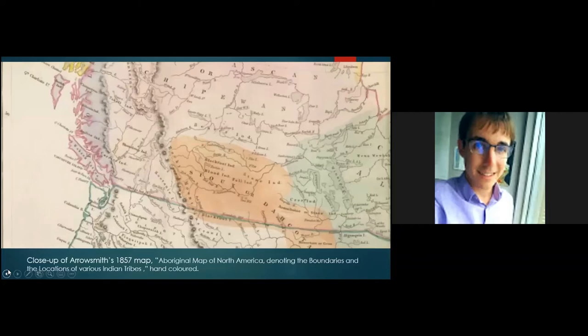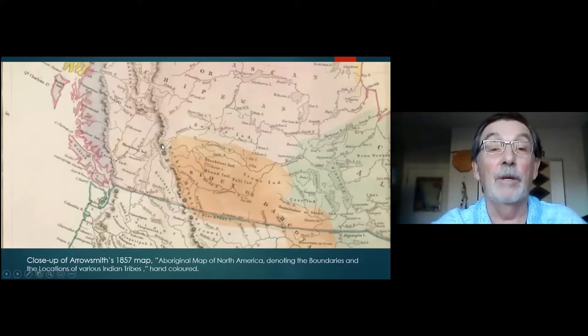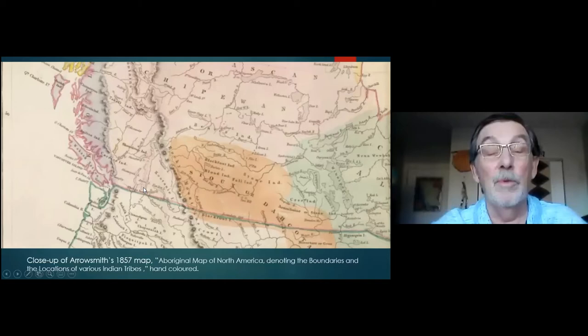I just wanted to mention that here are the Shuswap, or Sequepic as they are called today. Notice the color — I don't know if this is a light purple shade representing the interior peoples — but the Shuswap are not related to the people known as the Dekal Indians farther north. So this is the lack of information that these cartographers had at the time.